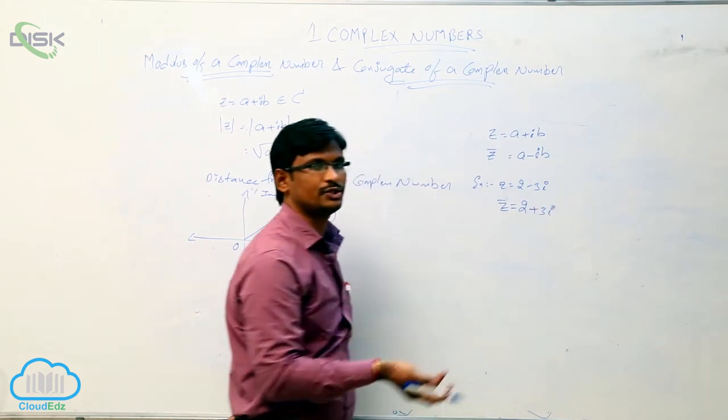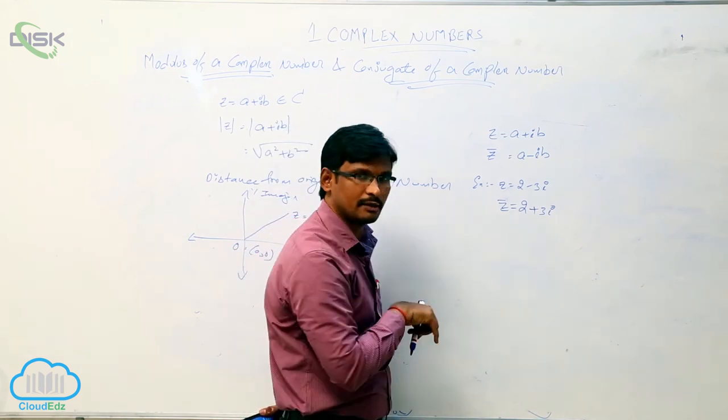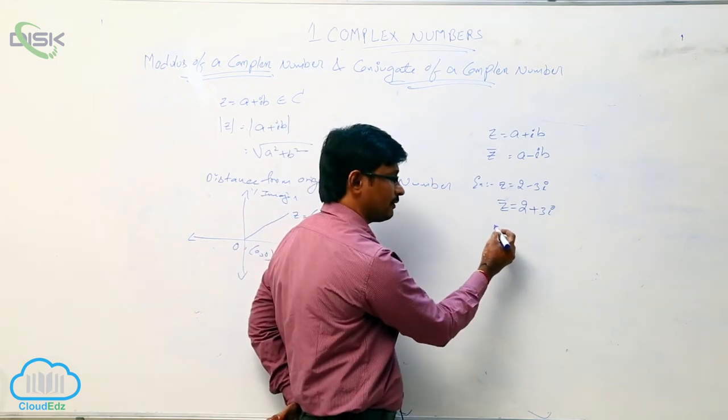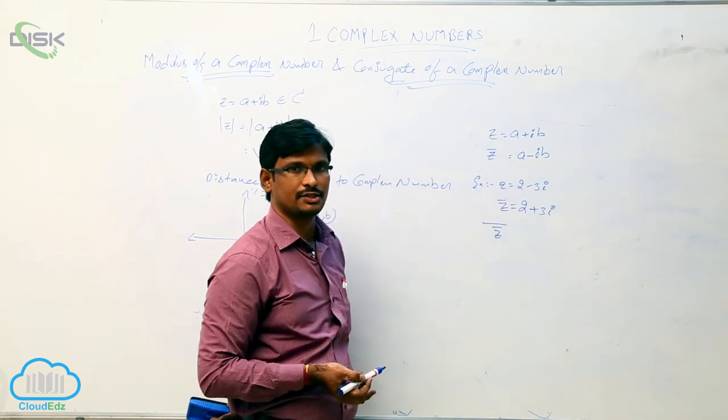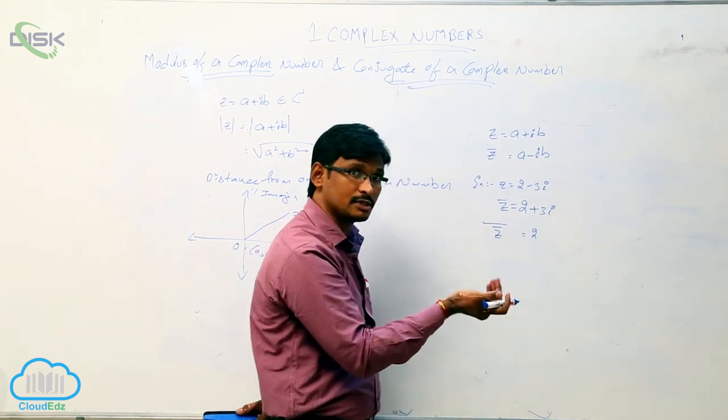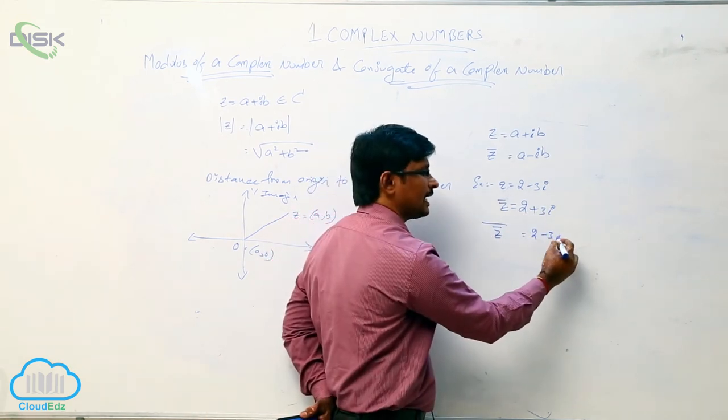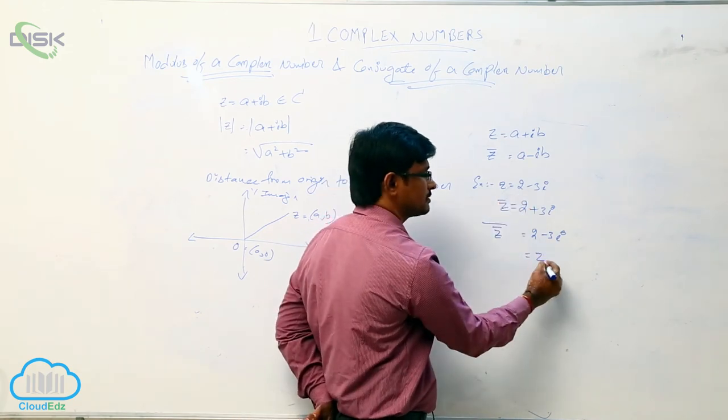Again, if you do the conjugate of this one, for what? Already z bar is there. For this again, find out conjugate. That is 2. What is that plus 3 opposite? Minus 3i. Which is nothing but what here? z.